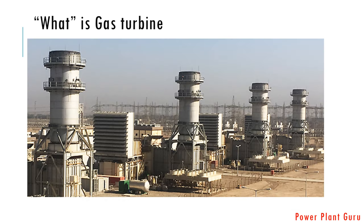Now this is how a typical gas turbine power plant looks like. This is the inlet air filter house which we discussed. This is the gas turbine section, and this is the exhaust. So we will go one by one in detail in the next series of videos.